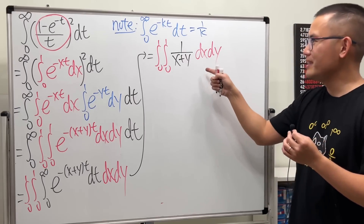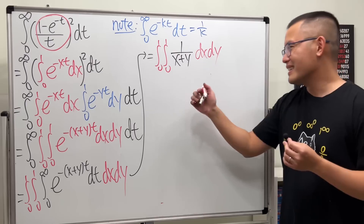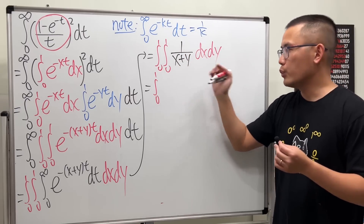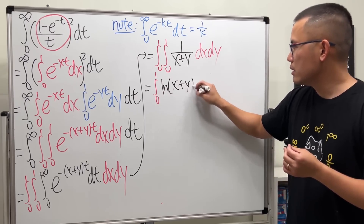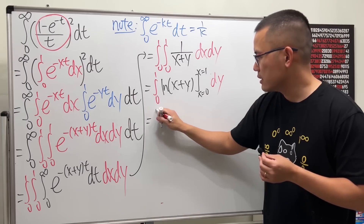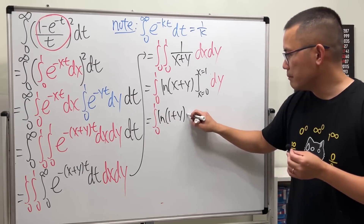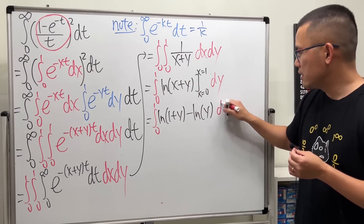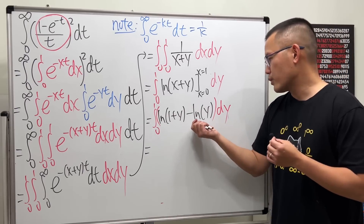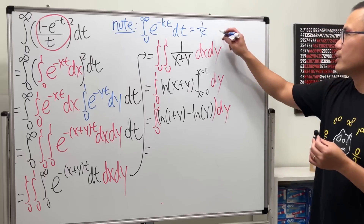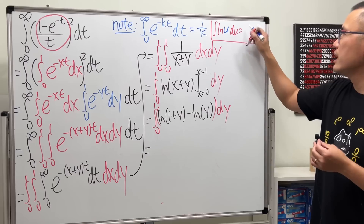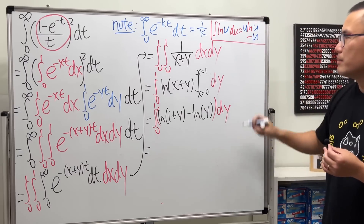Thankfully, we can integrate this one step at a time. Keeping the outer integral, integrating one over (x plus y) with respect to x gives the natural log — no absolute value needed since we go from zero to one. Plugging in gives: ln(1 plus y) minus ln(y), integrated with respect to dy. Both ln(1 plus y) and ln(y) can be integrated using integration by parts. The formula is: integral of ln(u) du equals u·ln(u) minus u.